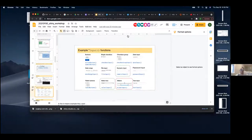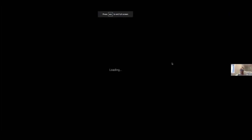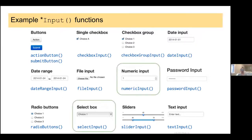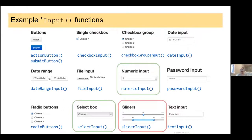Instead, let's build the app version of that R code. We have several different input function options. In the k-means clustering example with the IRS dataset, they used the numeric input to set the number of clusters, and the select box input to choose what features to plot from the dataset. In our histogram example, we're going to use the slider input function.